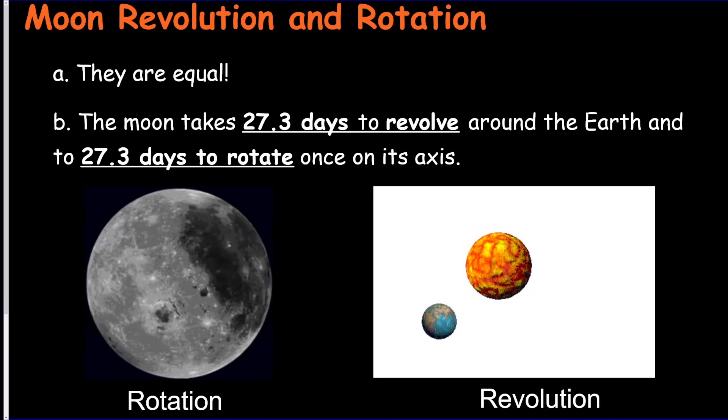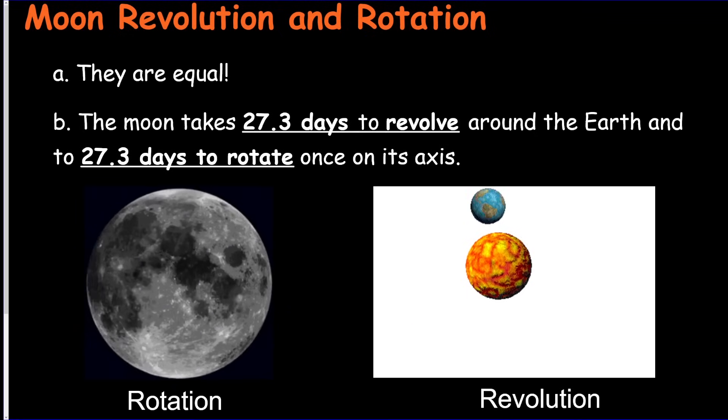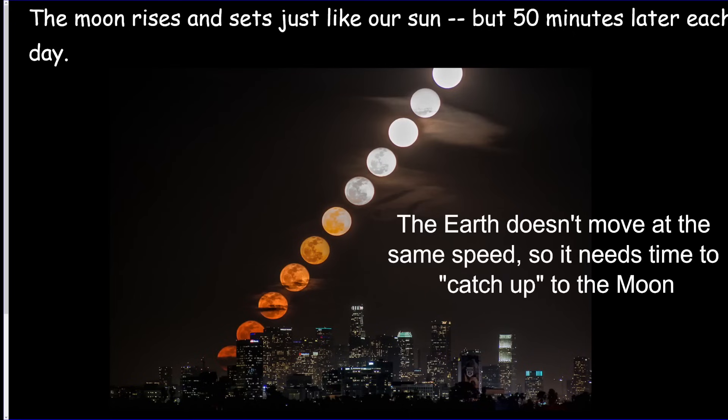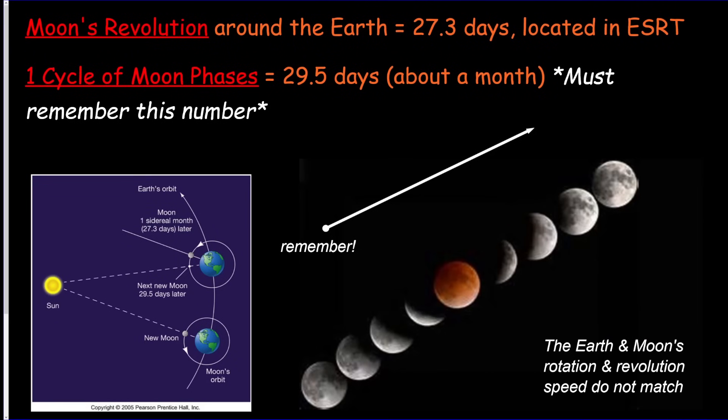All right, the Moon. It's going to be the last part of astronomy here. The Moon takes 27.3 days to revolve and rotate, so we always see the same side of the Moon. The Moon rises 50 minutes later every single day. There are craters on the Moon because the Moon does not have an atmosphere.